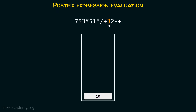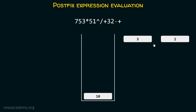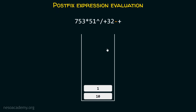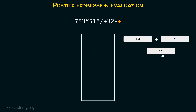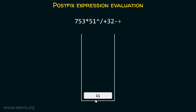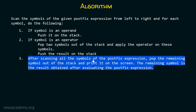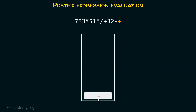Next we encounter 3 — this is an operand, so we push it onto the stack. After this, we push 2 onto the stack. Then we encounter the minus operator — we pop 3 and 2. We perform 3 minus 2 (we cannot do 2 minus 3; we must do 3 minus 2), which gives 1. We push 1 onto the stack. Finally, we have the plus operator: we perform 10 + 1 = 11 and push 11. This is the final result.